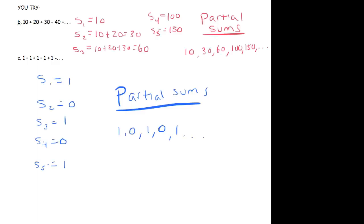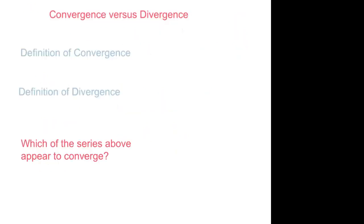Alright, well hopefully you came up with these answers here. You had your first five partial sums, and then if you wrote them in a list, this is what you should have gotten. So I'm going to refer to these in the next slide.